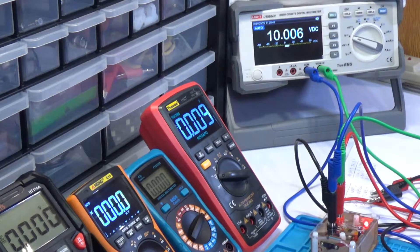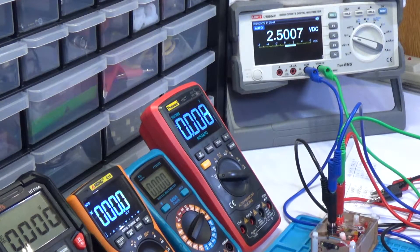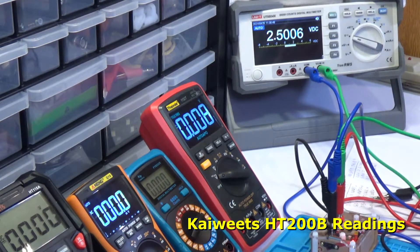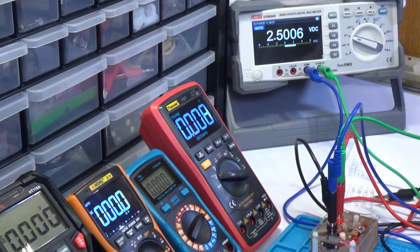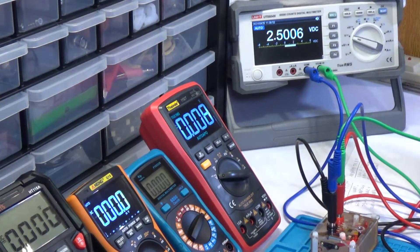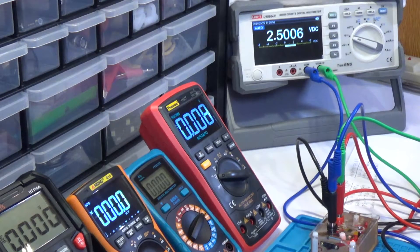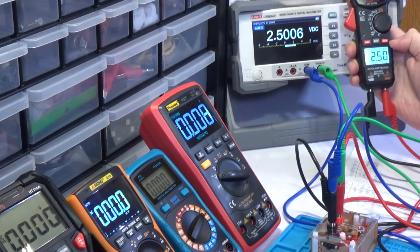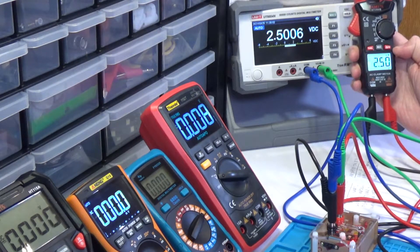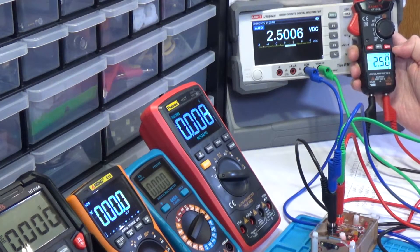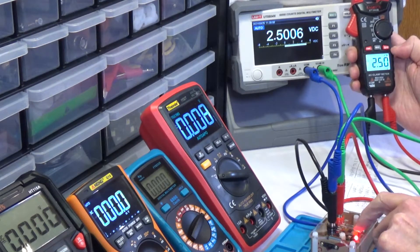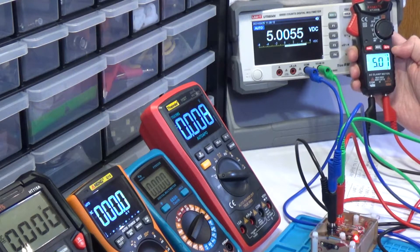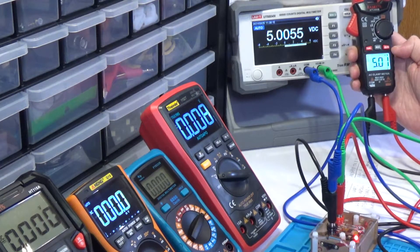So we're going to start off here with the Coites. And as you can see it is reading 2.50. Let's go to 5 volts. And we are getting 5.01, which is what it should be reading. So that's good.